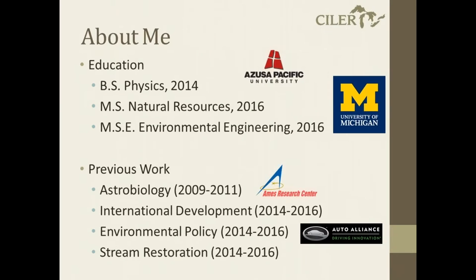So first I'll talk a little bit about me. I finished my undergrad at Azusa Pacific University in 2014 in physics. Right after that, I came here to the University of Michigan, studied environmental engineering and natural resources, and finished those just a few months ago. Outside of academics, I worked as an astrobiology intern for a couple of years with the NASA Ames Research Center in California. I've also had different projects in international development and environmental policy, and then most recently working in stream restoration for my graduate research, developing more sustainable artificial spawning reefs for sturgeon in the Detroit and St. Clair rivers.